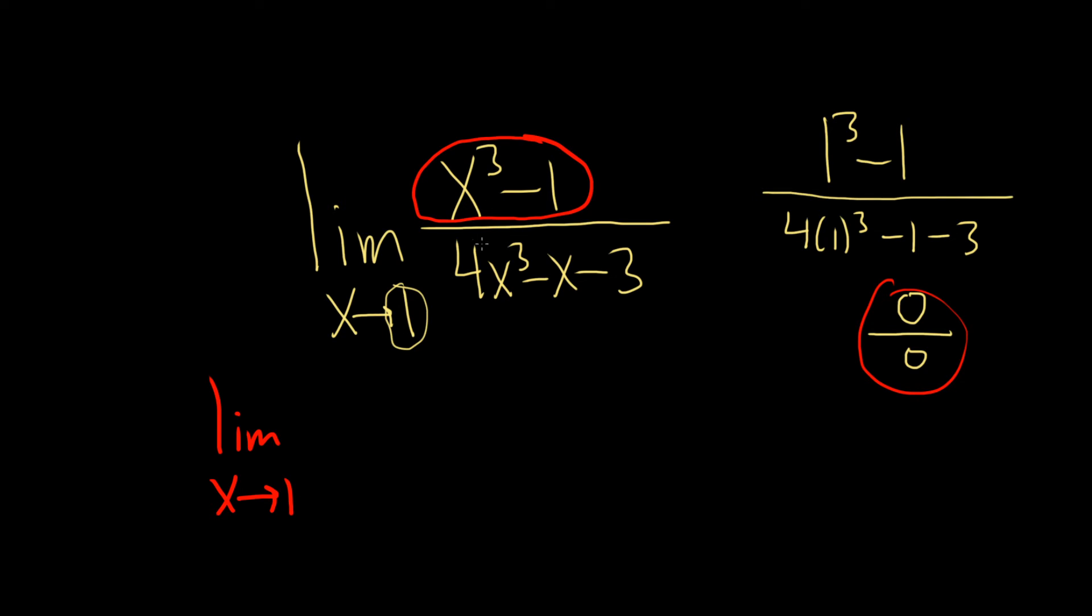So the derivative of x cubed minus 1, that's pretty easy. We use the power rule on x cubed. That'll give us 3x squared. You bring down the 3 and then subtract 1. And then the derivative of negative 1 is 0. Over, down here we just multiply the 3 and the 4, that gives us 12. Subtract 1 from the exponent, so 12x squared. And then the derivative of x is 1, so minus 1. And then the derivative of 3 is 0.